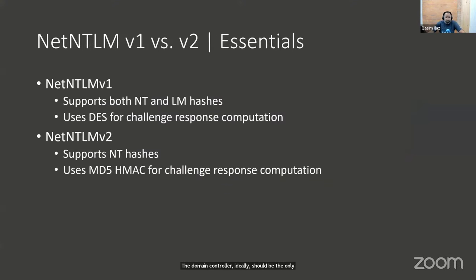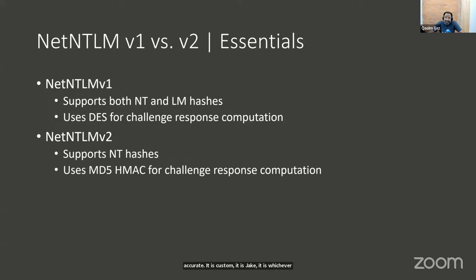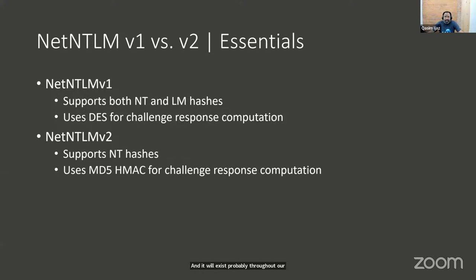There are two versions: V1 and V2. The older NetNTLM V1 protocol uses LM hashes and DES for encryption and challenge-response computation. V2 uses NT hashes, so hash cracking speeds for V2 are a bit slower than V1 — though still very fast. On our work laptops we've been doing it at about 5 billion guesses per second. V2 uses HMAC-MD5, similar to your NT hash.